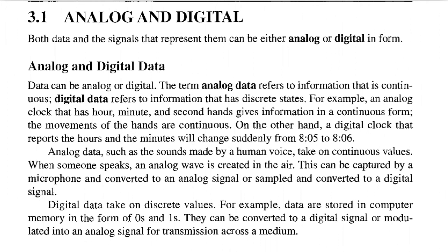For example, an analog clock that has hours, minutes, and seconds gives information in a continuous form — the movements of the hands are continuous. On the other hand, a digital clock that reports the hour and the minute will change suddenly from 8:05 to 8:06.